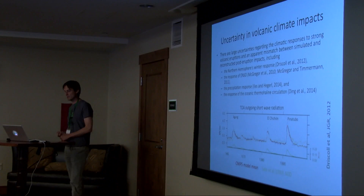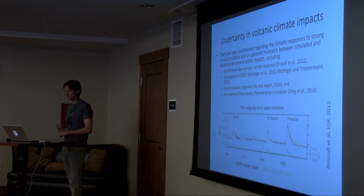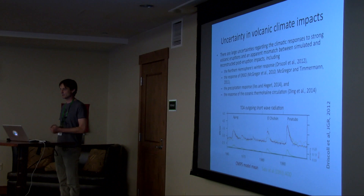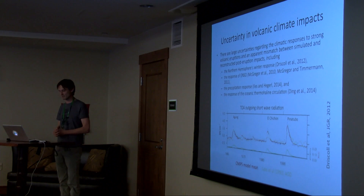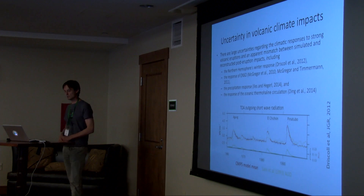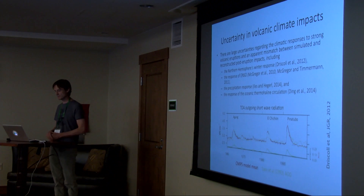Of particular interest is the Northern Hemisphere winter response, which has a well-known mechanism — you end up with a positive NAO and particular temperature distributions from that. But it doesn't always come out in all the model runs and for all the volcanoes.